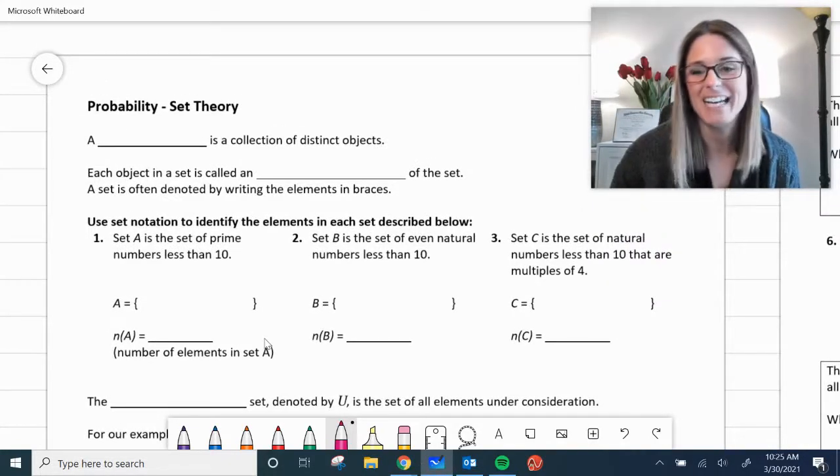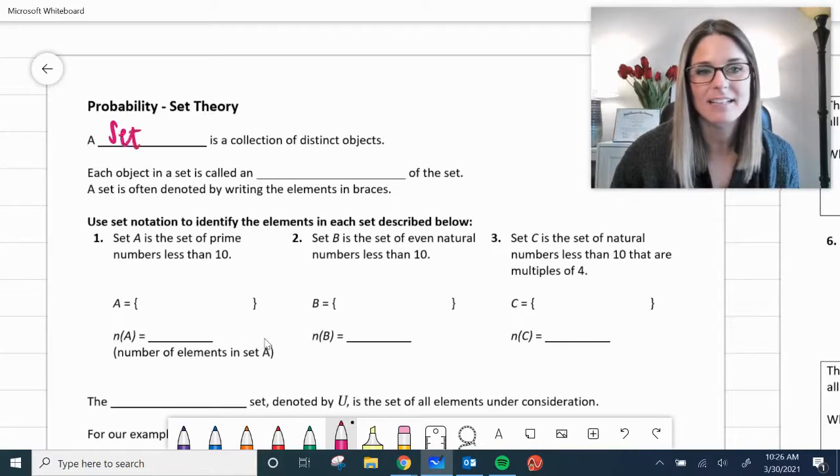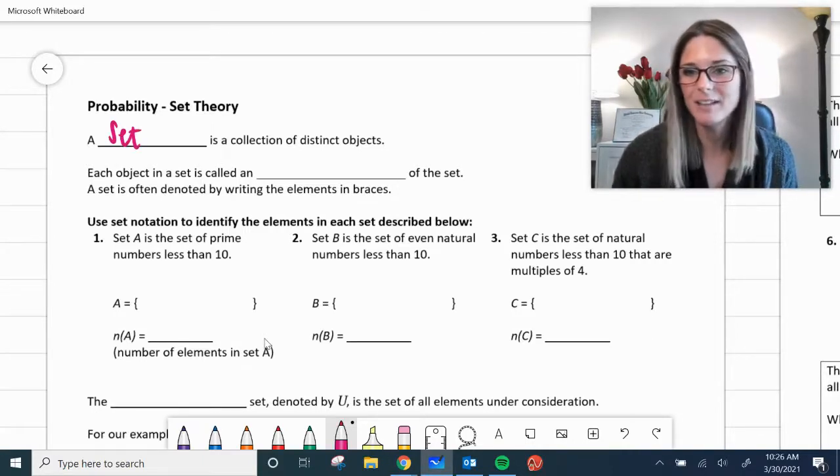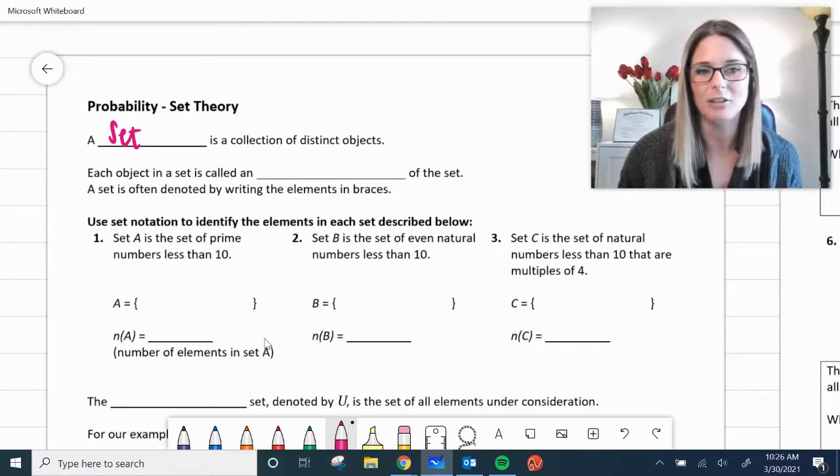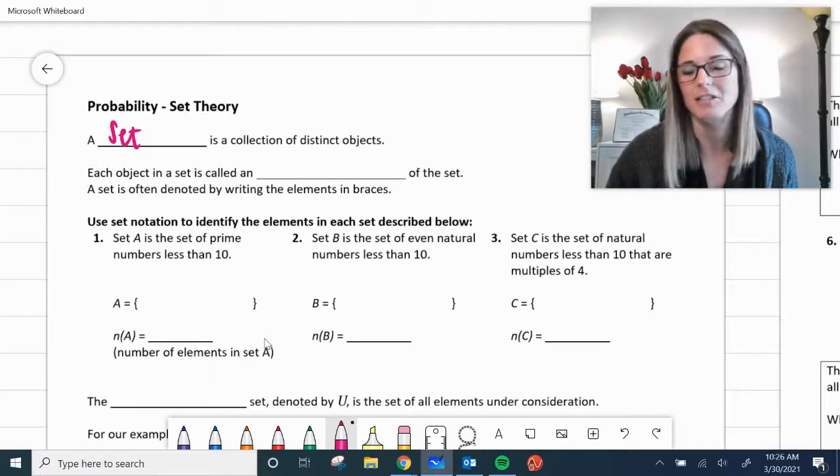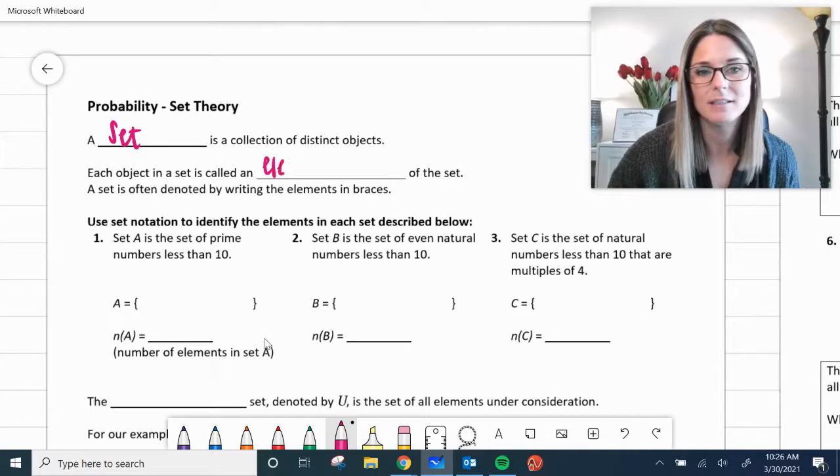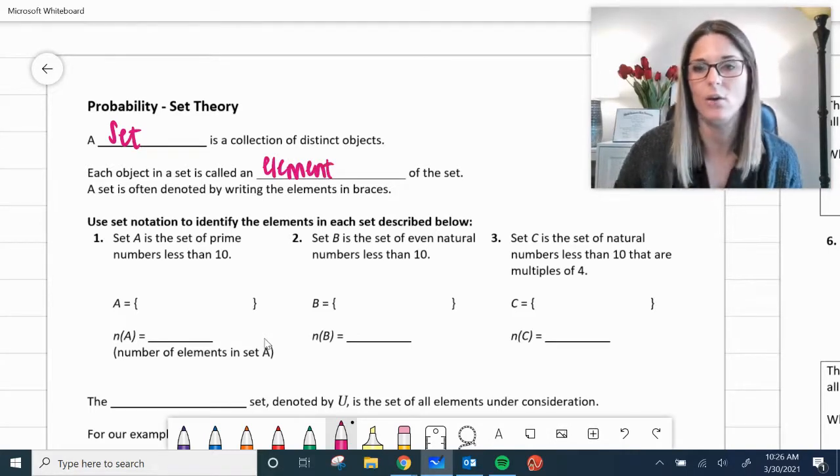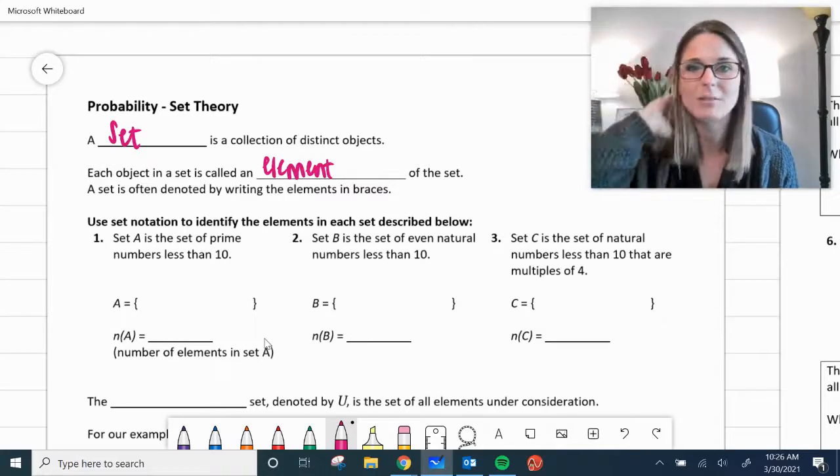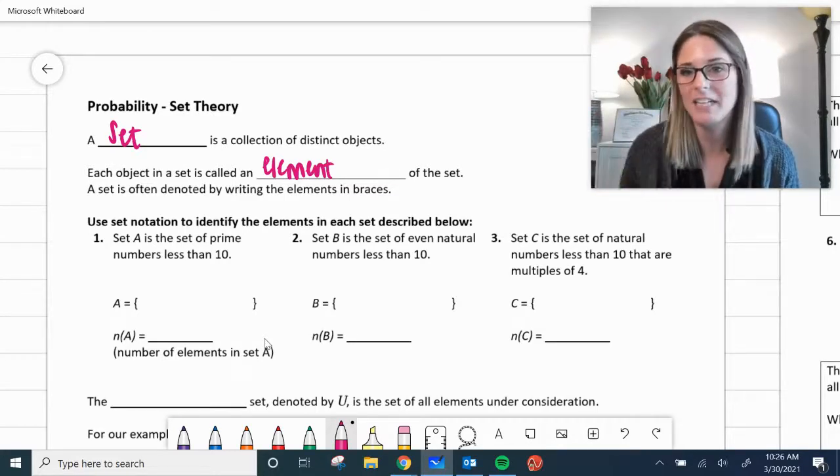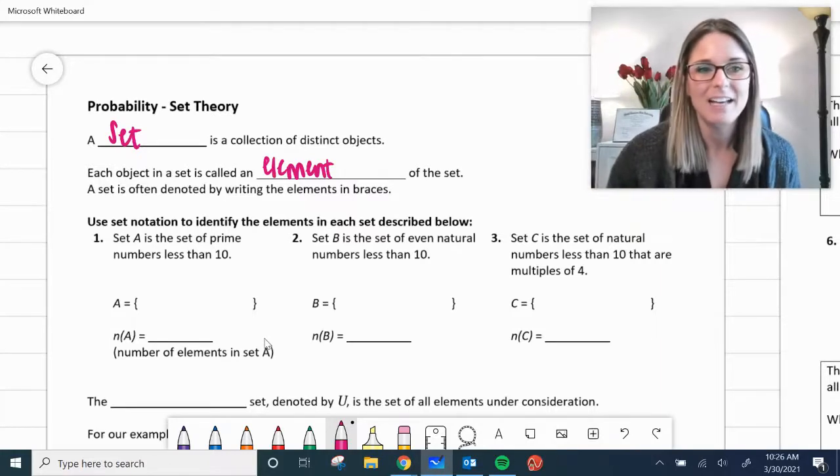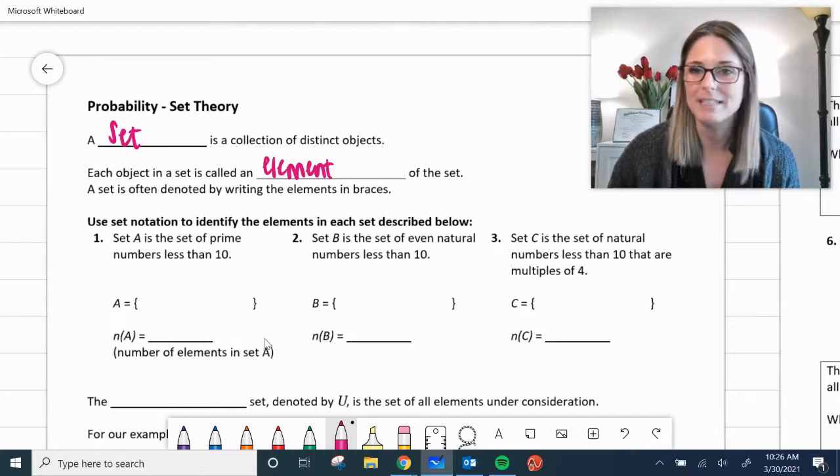So your first one here is a set is a collection of distinct objects. So anytime you see them talk about, you can look ahead at number one. Set A is the set of prime numbers, so it's going to be a collection of distinct objects. Each object in the set is called an element. So each individual thing is an element. As we start talking about probability and drawing marbles out of a bag, each marble would be an element. A set is often denoted by writing the elements in braces, which is what we're going to do in our next few examples.